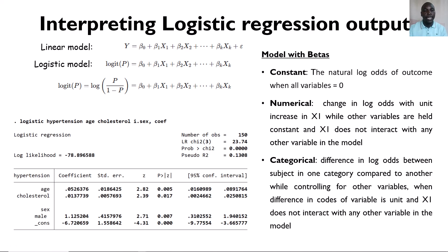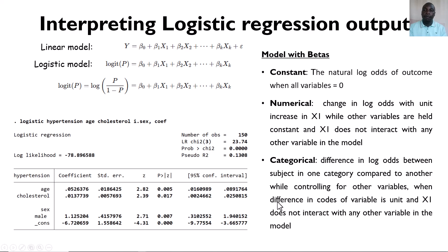When interpreting a categorical variable, we also add the condition that the difference in codes between categories of that independent variable must be unit — for example, 0 and 1, or 1 and 2, or 3 and 4. You should not code one category as 0 and another as 5, because then the difference is not unit and when you calculate the interpretation you get a completely different result. It is very important to emphasize this unit-difference coding condition for categorical variables. That is how we interpret logistic regression output when requesting coefficients.